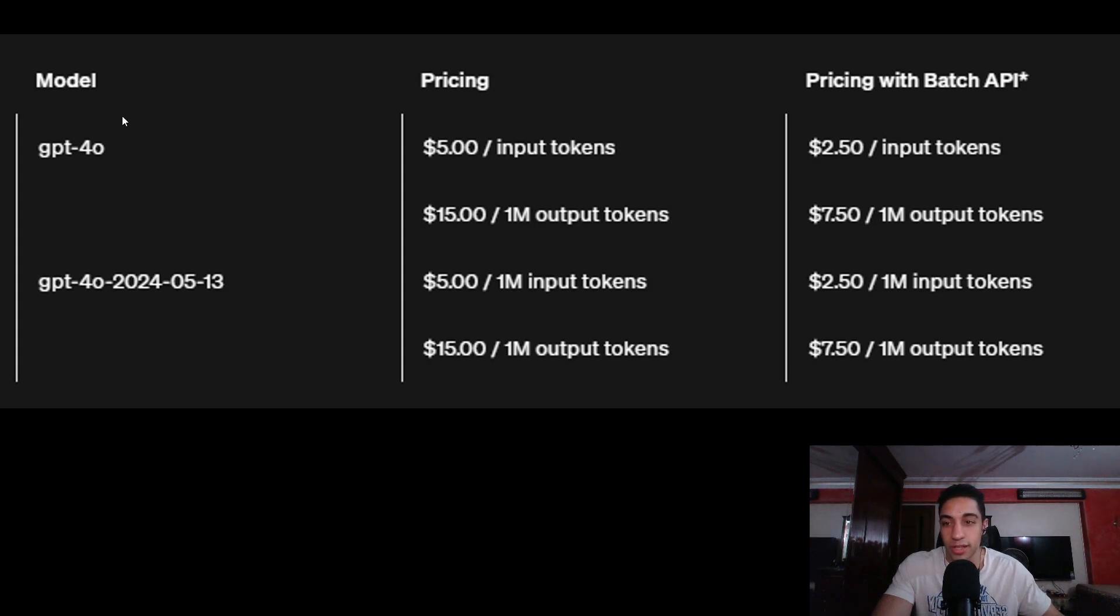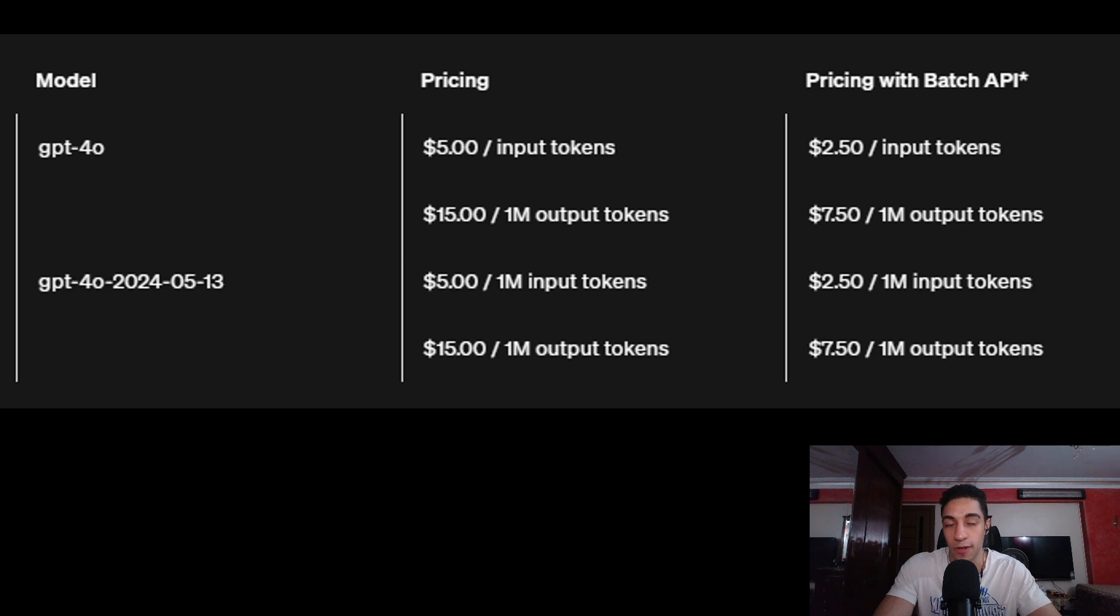Just like the pricing for different models—for example, here we have GPT-4o. We have the output versus the price of the input. This directly relates to the previous slide where we show that the prefill phase is much faster because it can be computed in parallel.